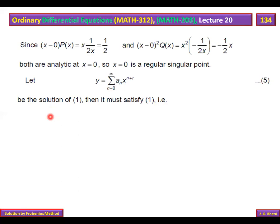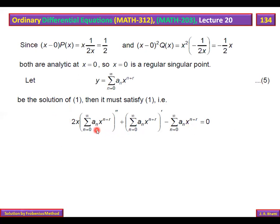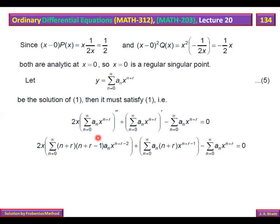Assuming y = Σ aₙ xⁿ⁺ʳ is a solution, it must satisfy the differential equation 2x y'' + y' − y = 0. Computing the second derivative gives n+r times (n+r−1) times aₙ xⁿ⁺ʳ⁻². The first derivative is (n+r) aₙ xⁿ⁺ʳ⁻¹. These are then substituted back into the ODE.